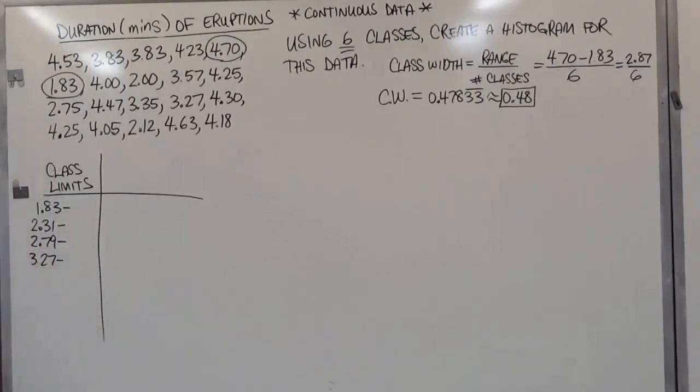After we add 0.48 to this number, we're going to get 3.75. And for the last class, first lower limit, we're going to add another 0.48, and that's going to give us 4.23.